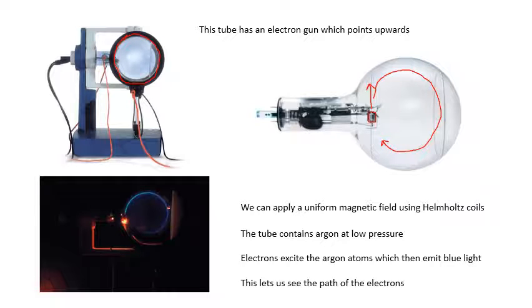We apply a uniform magnetic field using the Helmholtz coils. The tube contains a little bit of argon so that when the electrons hit the argon, the atoms get excited and give off some light. You can actually see the circle and measure the radius, which we'll use in our calculations.